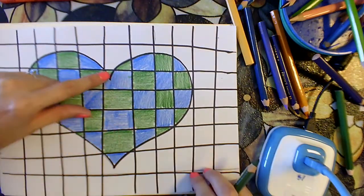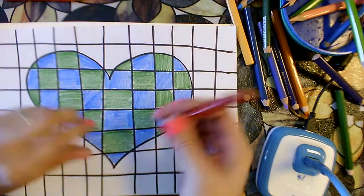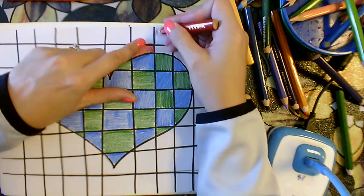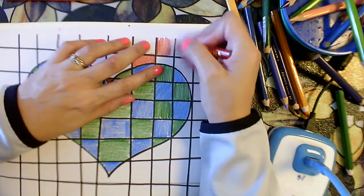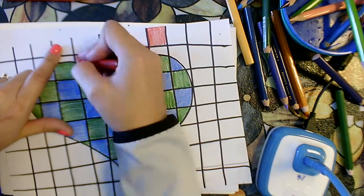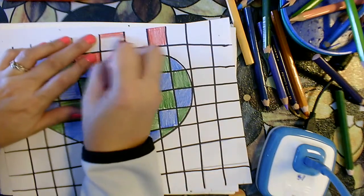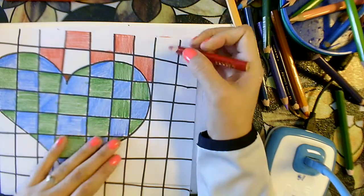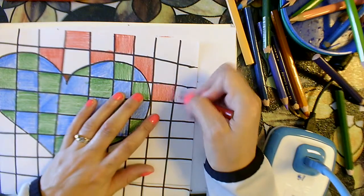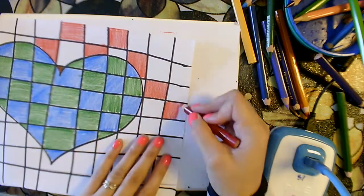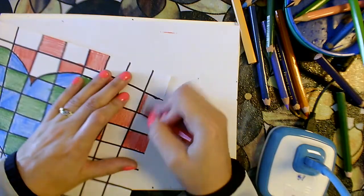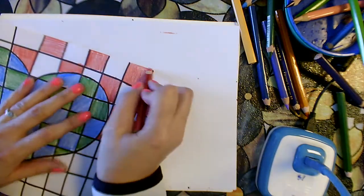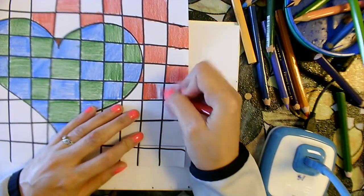Now, I don't know if you noticed, but I made a mistake there. I colored that little tiny bit green, so I'm going to go ahead and color over that with red, and then I'm going to do that same diagonal pattern on the outside of the heart. Again, creating the checkerboard or chessboard kind of look.